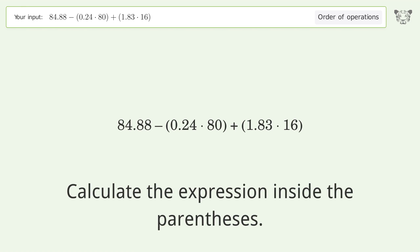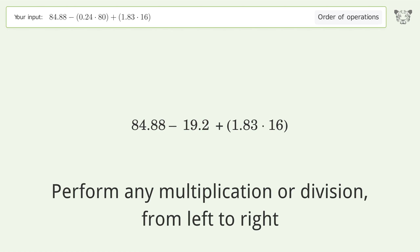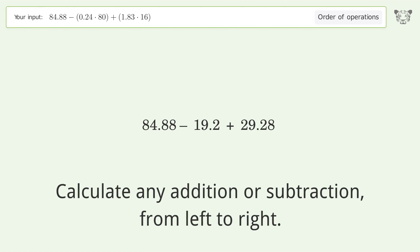Calculate the expression inside the parentheses. Perform any multiplication or division from left to right: 0.24 times 80 equals 19.2; 1.83 times 16 equals 29.28. Calculate any addition or subtraction from left to right: 84.88 minus 19.2 equals 65.68.